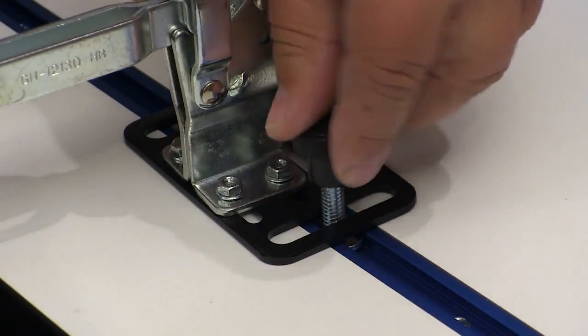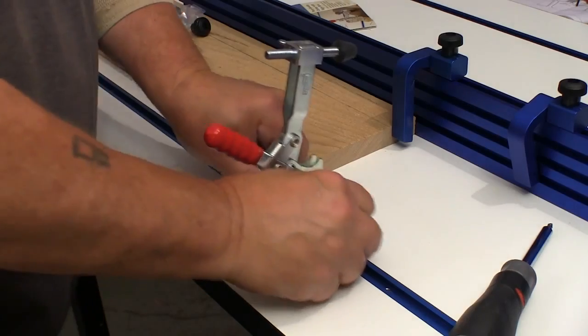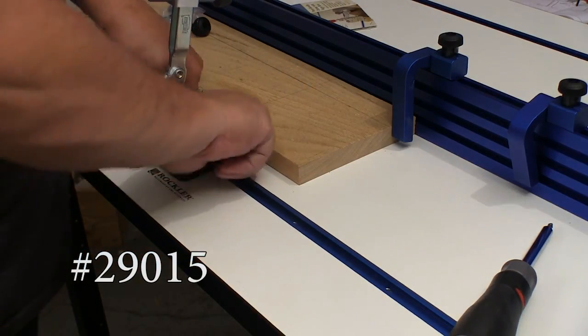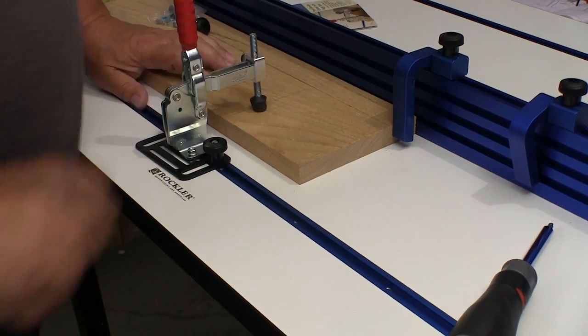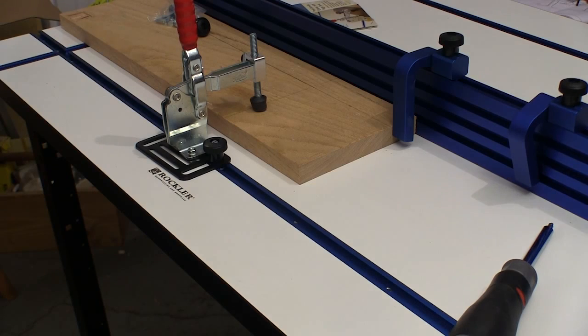Combined with one of Rockler's quick set post handle clamps, you can locate and apply pressure wherever you need for your fixture or jig.